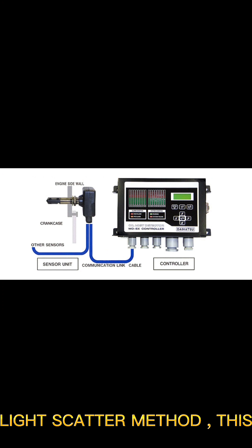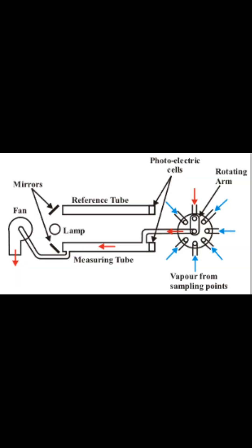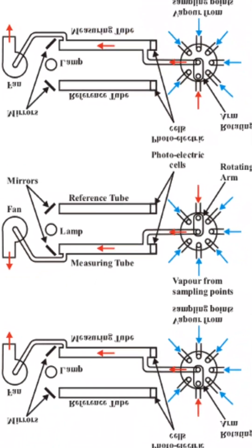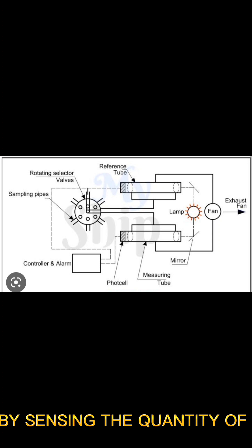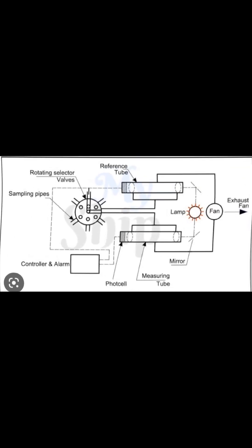There are two methods used onboard to detect oil mist on the main engine crankcase. The first is the light scatter method, which acts when the detector detects oil by checking the quantity of light scattered due to oil mist. The second method is called the absorption method, which detects density by sensing the quantity of light penetration through oil mist from a transmitter to a receiver.